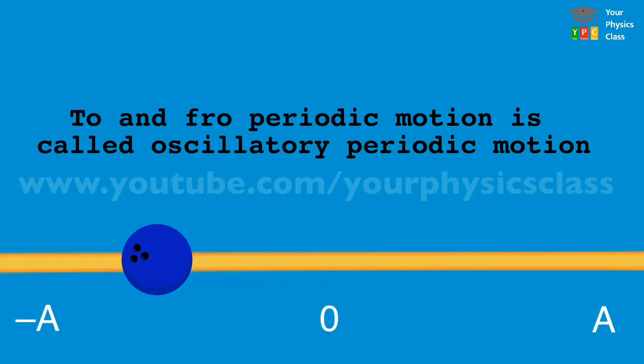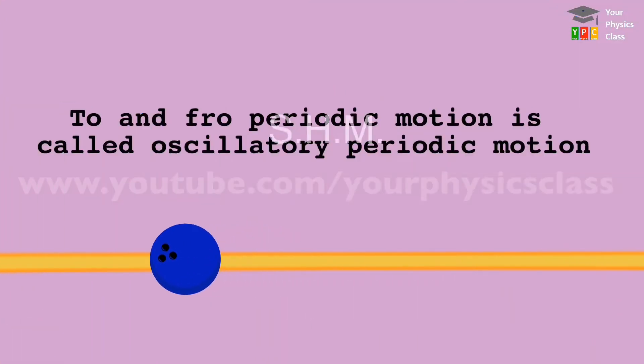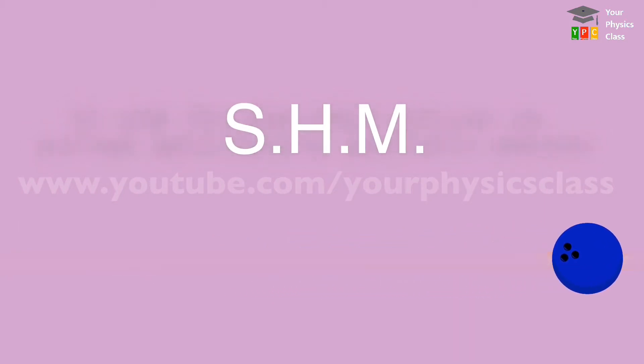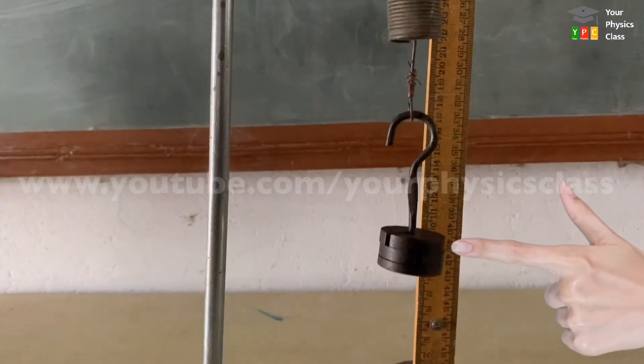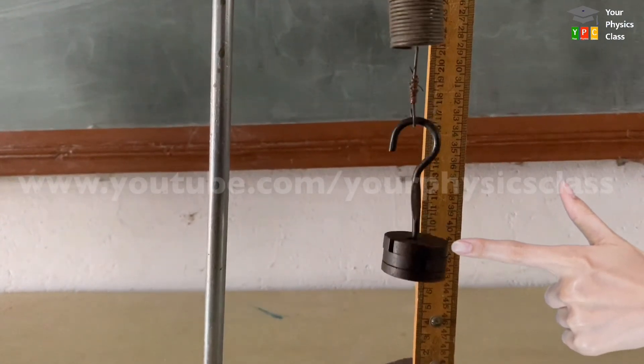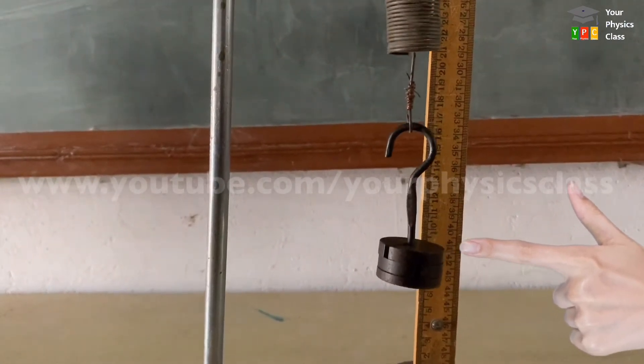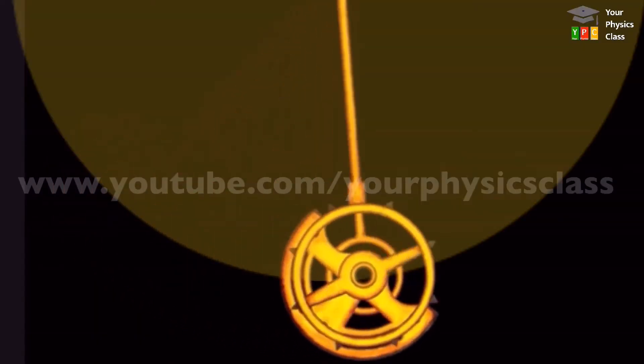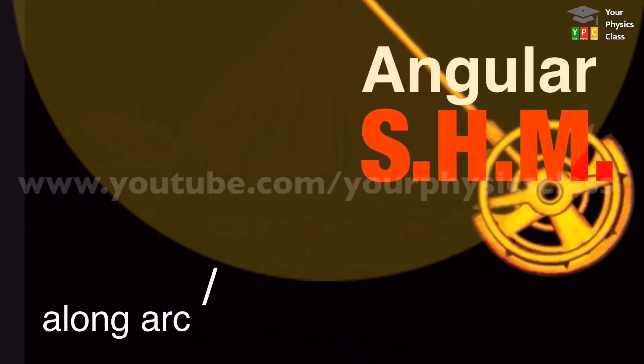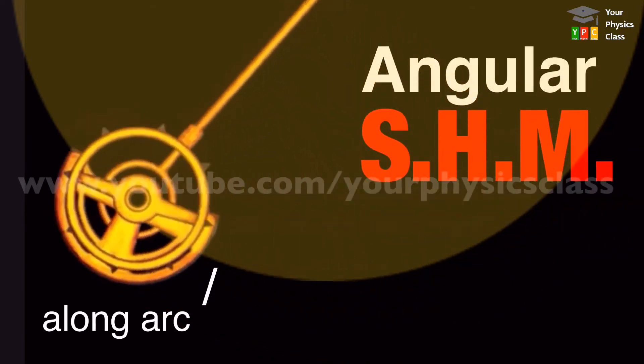To and fro periodic motion is called oscillatory periodic motion. Oscillatory periodic motion is called simple harmonic motion. If the path of motion is straight, then motion is called linear simple harmonic motion. If the path of motion is an arc of a circle, then motion is called angular simple harmonic motion.